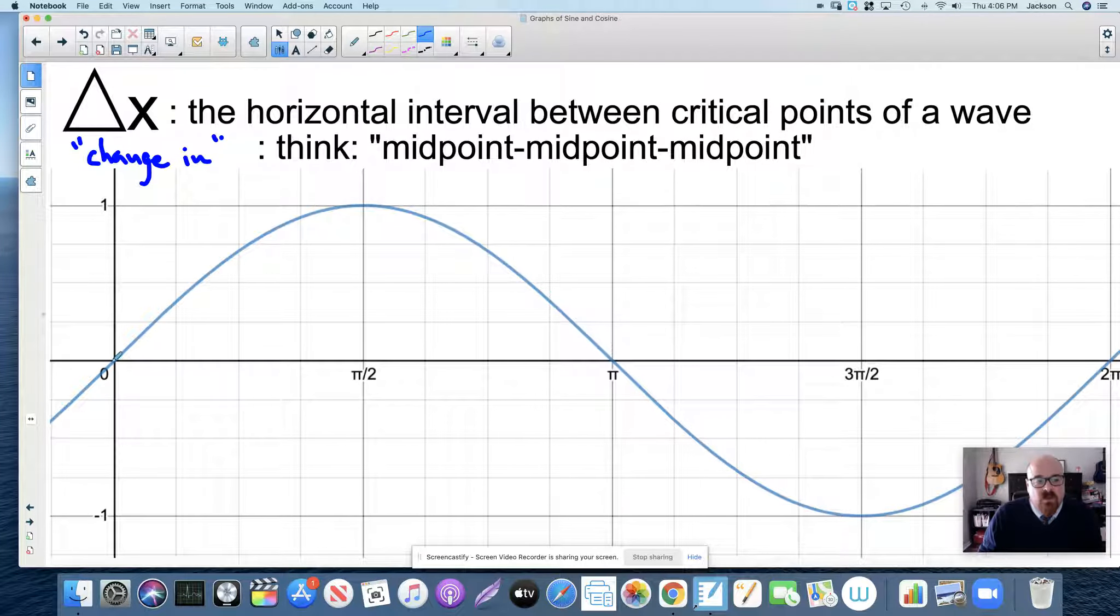If you look at the period of a sine wave from zero to two pi, in the middle of that is an intercept. So a sine wave starts at an intercept, in the middle of the period has an intercept, and at the end of the period has an intercept.